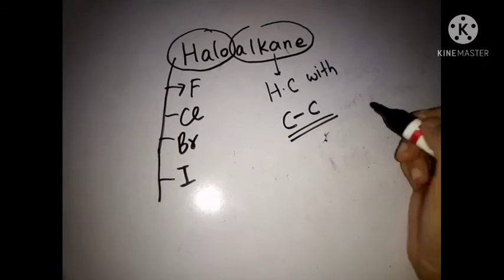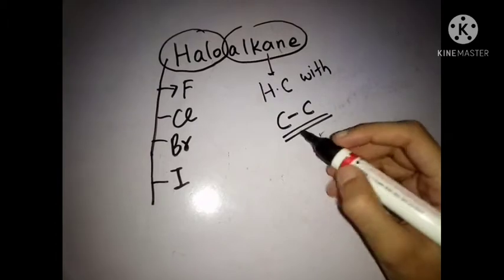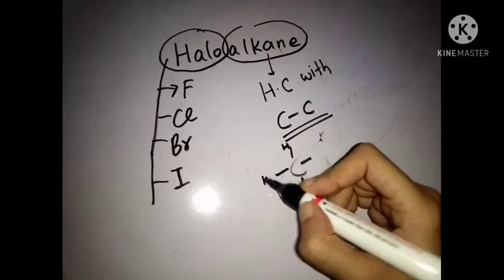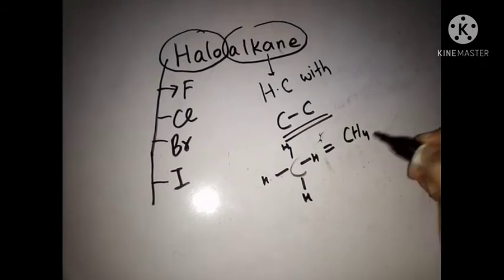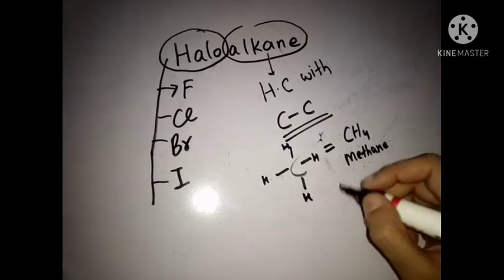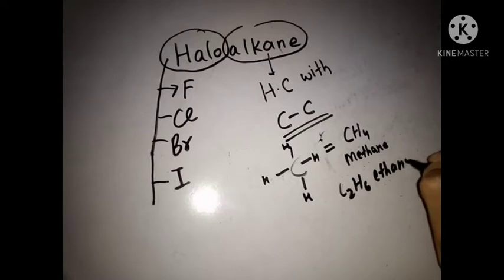Like methane, that is CH4, and ethane, that is C2H6. Now methane has four hydrogen and one carbon. It is the first member of alkane family. Then we have ethane C2H6, it has two carbons and six hydrogen.